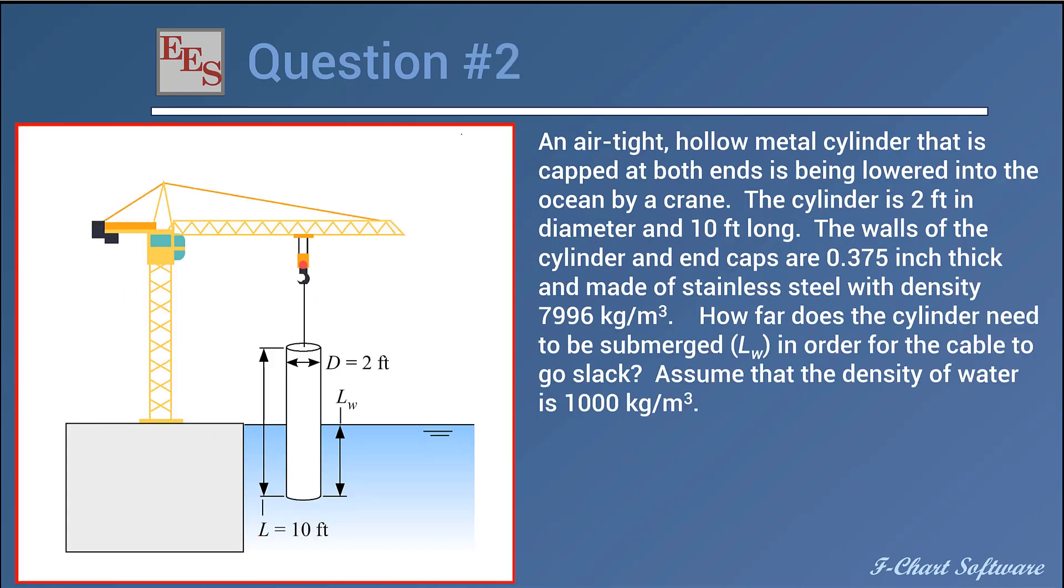The second question is a fluids question, basically a buoyancy question. There's a cylinder that's hollow and airtight being lowered into a body of water. The cylinder is 2 feet in diameter, 10 feet long, with 3/8 inch thick walls made of stainless. The question is how far does the cylinder have to be submerged before the cable goes slack, so basically before the cylinder starts to float. Here's the density of water. Go ahead and work on those, and when you're ready to compare your answer to mine, come back and we'll go through how we would use EES to solve these two problems.